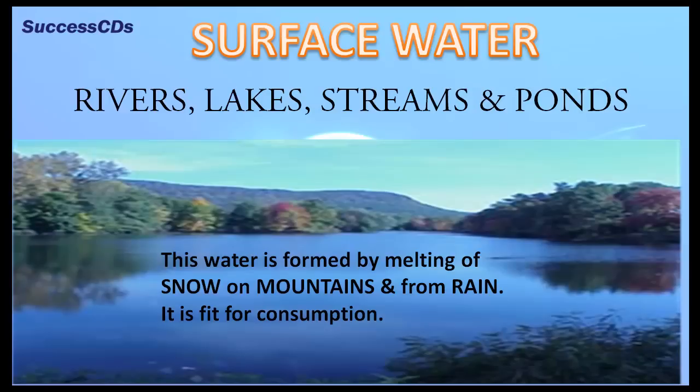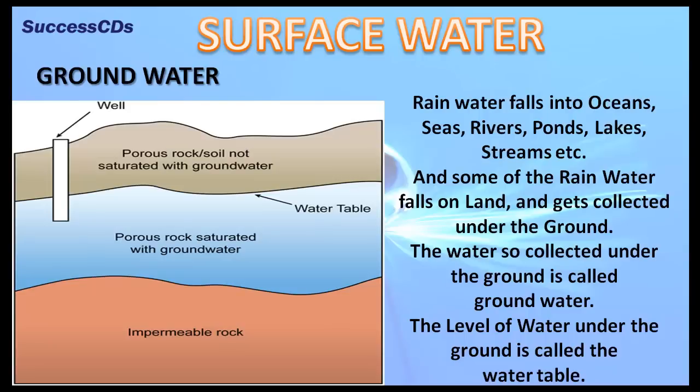This water is formed by melting of snow on mountains and from rain. It is fit for consumption. Rainwater falls into oceans, seas, rivers, ponds, lakes, streams, etc., and some of it falls on land and gets collected underground.